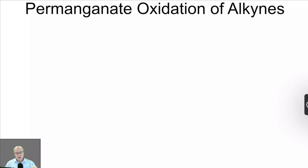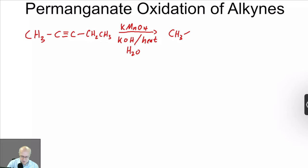Another method to oxidize alkynes into carboxylic acids is to use permanganate. If you had an alkyne in the presence of permanganate, KOH, heat, and a little bit of water, you will get the carboxylates.